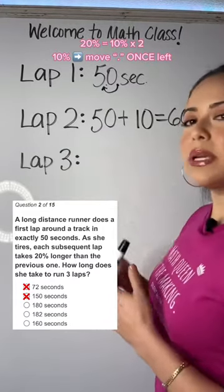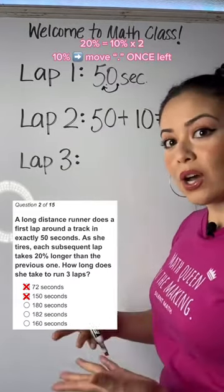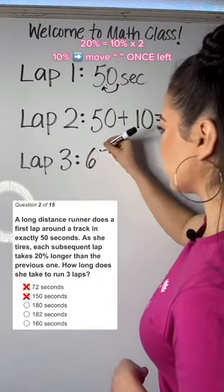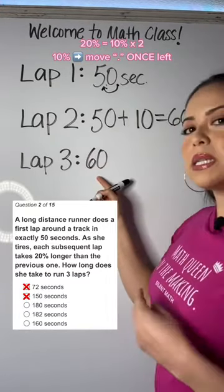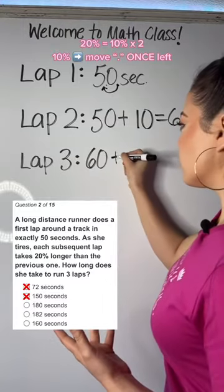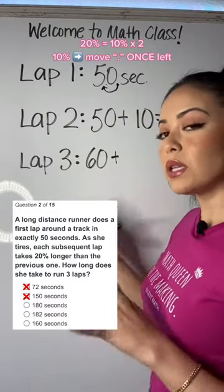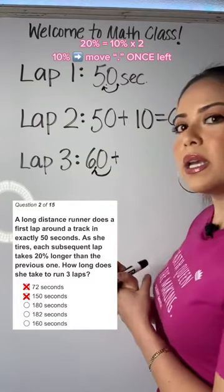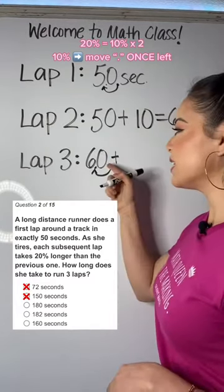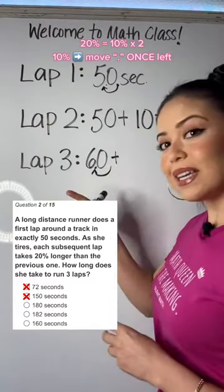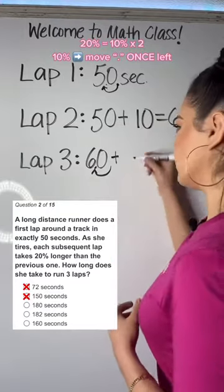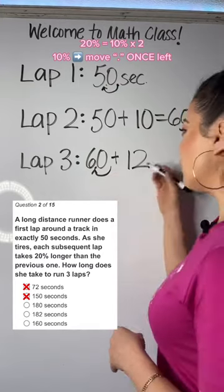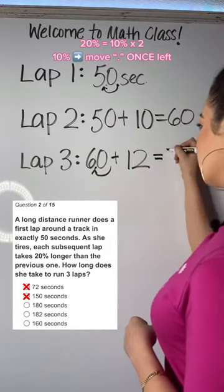Lap 3 is going to be 20% longer than the previous lap. So if this one was 60 seconds long, then it's going to be 60 plus whatever 20% of 60 is. 20% is double 10% of a number. In this case, 10% of 60 is 6, doubled is 12. So 20% of 60 is 12. Adding this together, we get 72.